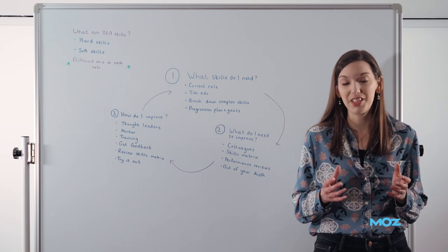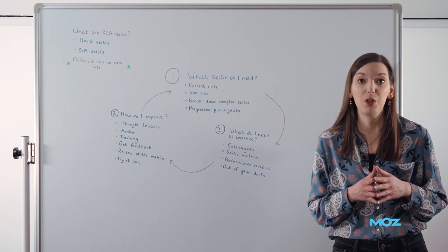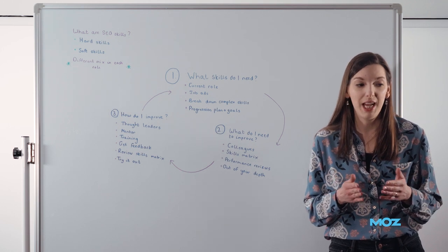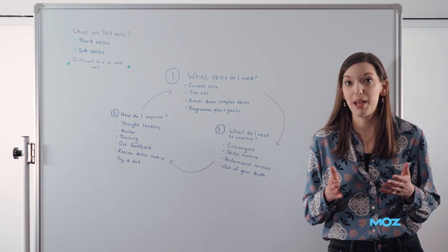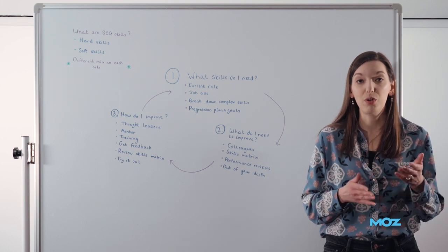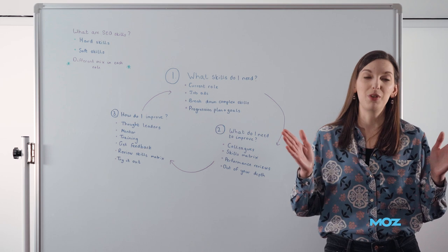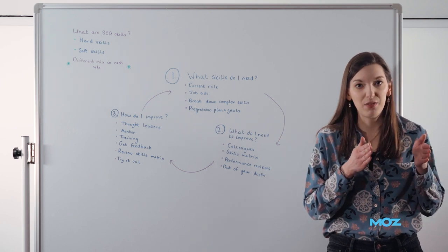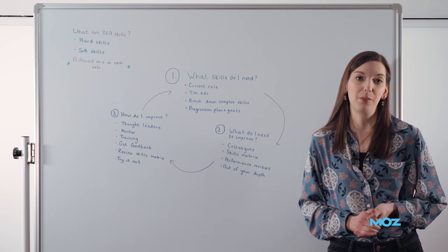But if you break it down into its component skills, it's about being able to communicate effectively and persuasively. It's about understanding business needs and blockers. It's about being able to understand development cycles and how your requests might fit into those. So stakeholder management, quite a broad skill, but start identifying what the component skills are of those complex ones.